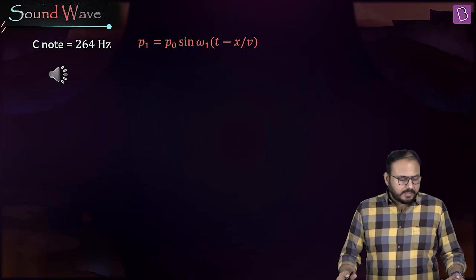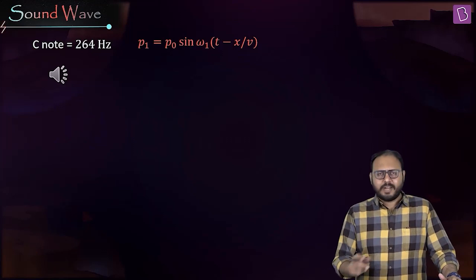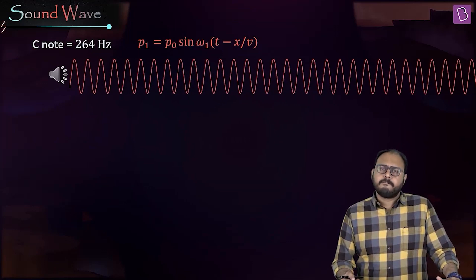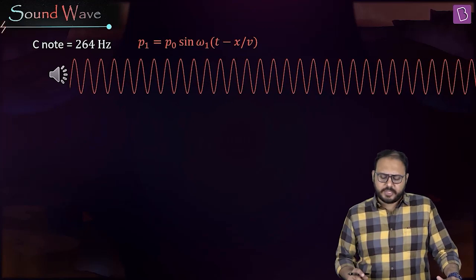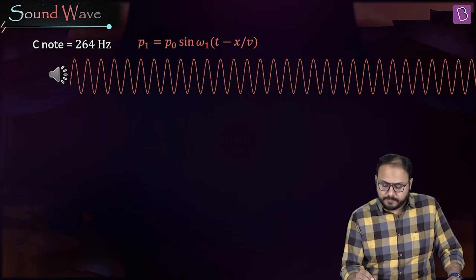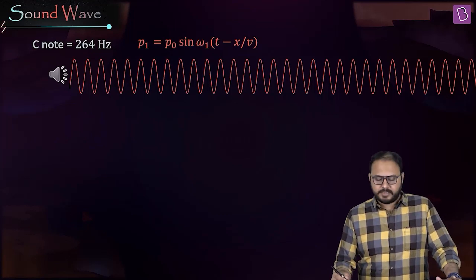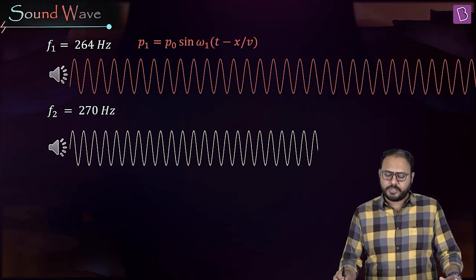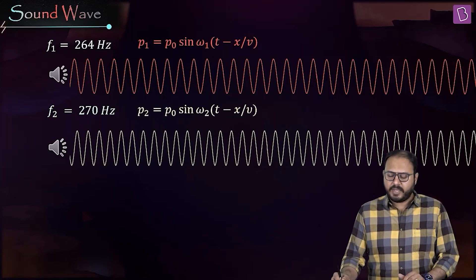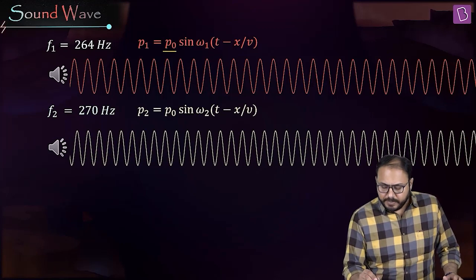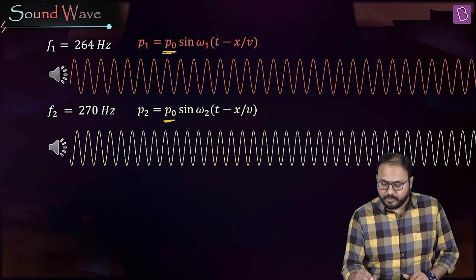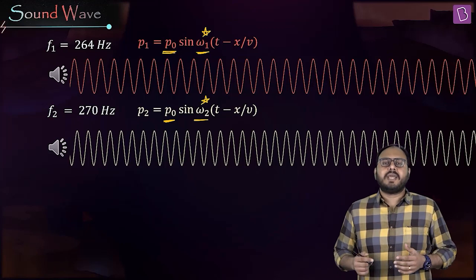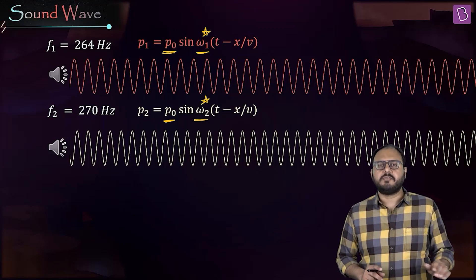Let's start beats. Consider a typical C note from the piano — frequency 264 Hz. The equation of this wave's propagation is p1 = p0 sin(ω₁(t − x/v)). Now take another frequency: 270 Hz, slightly different. Its propagation equation is p2 = p0 sin(ω₂(t − x/v)). Notice: they have the same amplitude p0 but different omegas. We've so far always kept omegas the same and varied amplitude — now let's keep amplitude the same but vary omega, and see what happens.